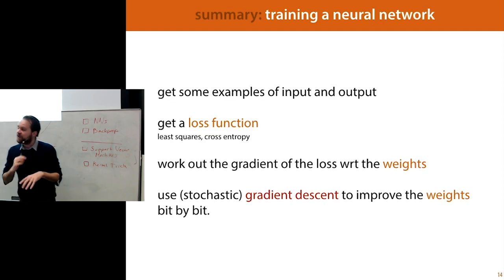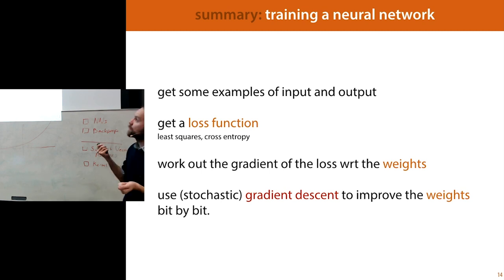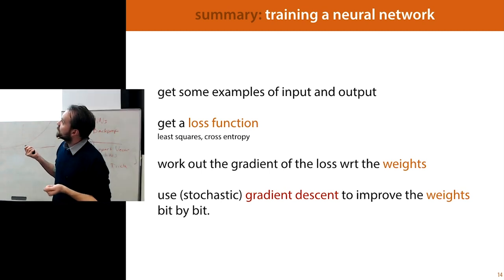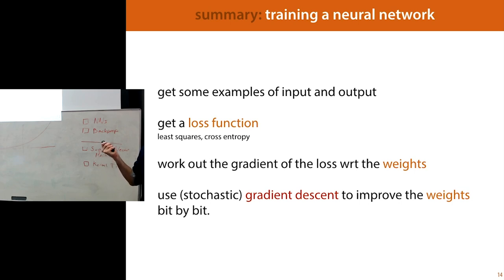The basics of training neural networks: get examples of inputs and outputs; figure out a loss function — least squares or cross entropy; work out the gradient of the loss with respect to the weights; and then use stochastic gradient descent to improve the weights bit by bit.